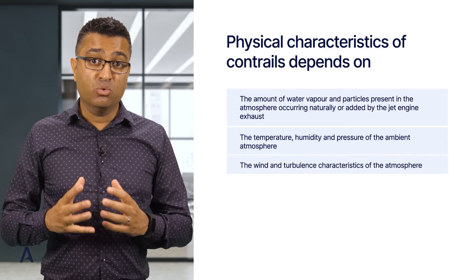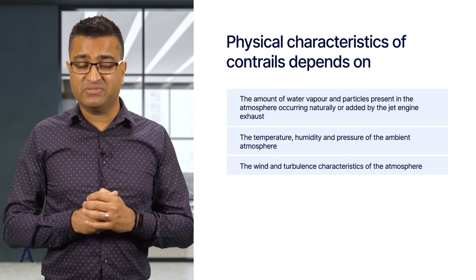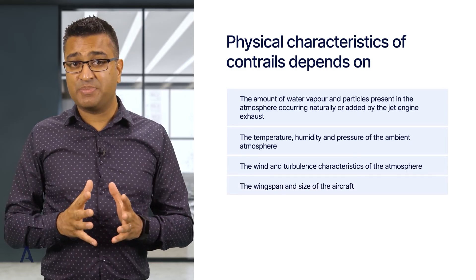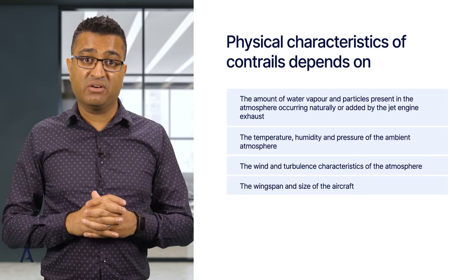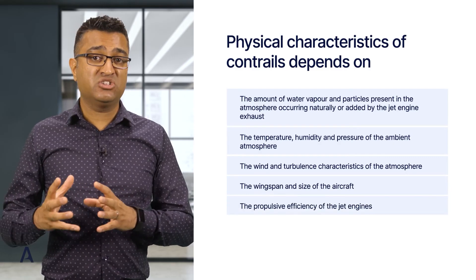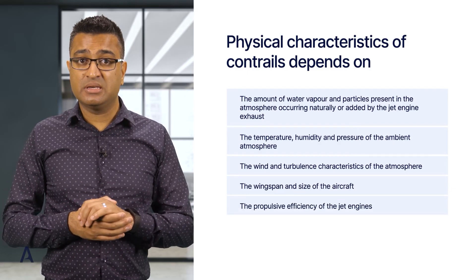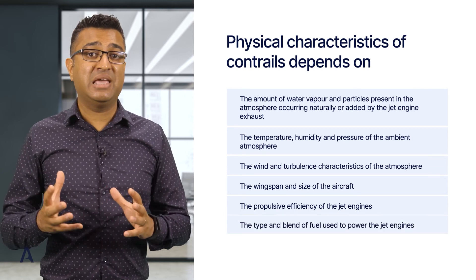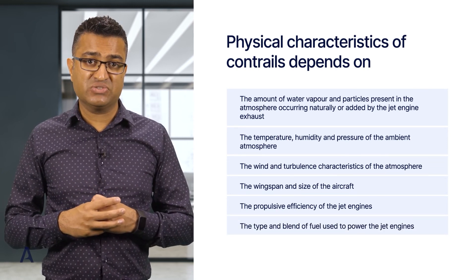The wind and turbulence characteristics of the atmosphere, the wingspan and size of the aircraft, the propulsive efficiency of the jet engines, and the type and blend of fuel used to power the jet engines.